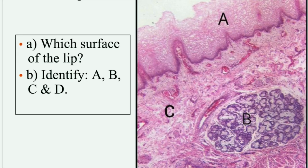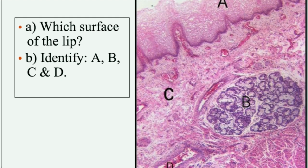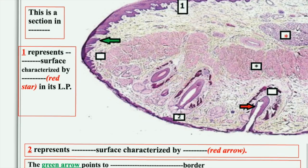Slide number four: surface A is the inner surface or mucous membrane side. Label A is the non-keratinized stratified squamous epithelium, label B is the labial glands which are mainly mucous with occasional serous acini, label C is the connective tissue corium under the epithelium containing blood vessels, nerves, and lymphatics. In identification you just mention the name. Label D is a blood vessel, visible by the blood inside.